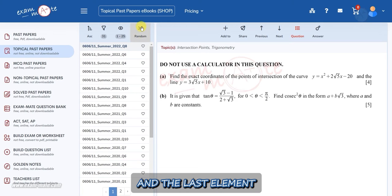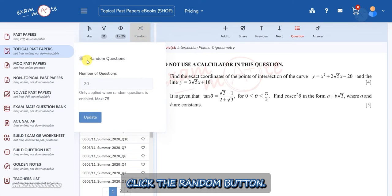And the last element is the random button. This button is more useful for teachers and parents. For example, you have 31 questions. Click the random button.